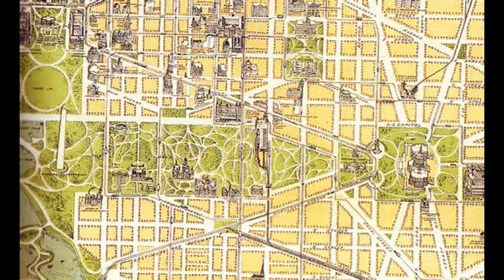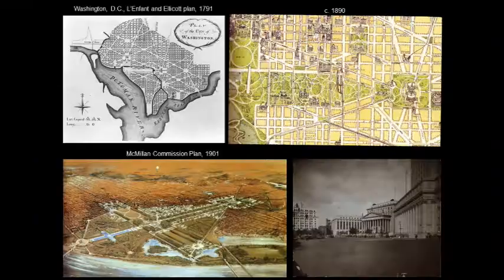Indeed it was Andrew Jackson Downing, the Newburgh, New York landscape designer, who designed this sort of irregular system. You can also see that by the late 19th century, the railroad had invaded into the space of the Mall and disrupted it. So the idea of the McMillan Commission Plan of 1901 is to restore the clear axial organization of the Mall back to its original idea.